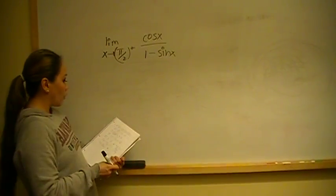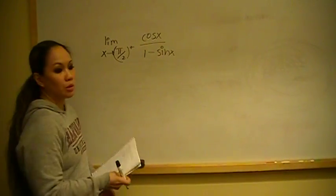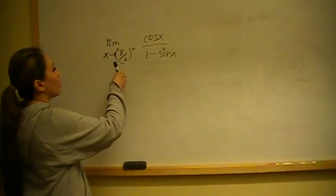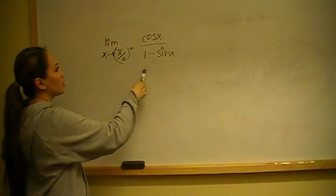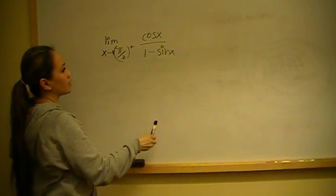So for problem number 7, we're asked to take a look at the limit as x approaches pi over 2 from the right of cosine x over 1 minus sine x.